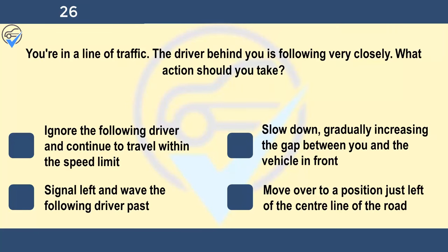You're in a line of traffic and the driver behind you is following very closely. What action should you take? Ignore the following driver and continue to travel within the speed limit, slow down gradually increasing the gap between you and the vehicle in front, signal left and wave the following driver past, or move over to a position just left of the centre line. If the driver behind is following too closely, there's a danger they'll collide with the back of your vehicle if you stop suddenly. You can reduce this risk by slowing down and increasing the safety margin in front of you. This reduces the chance that you'll have to stop suddenly and allows you to spread your braking over a greater distance — this is an example of defensive driving.